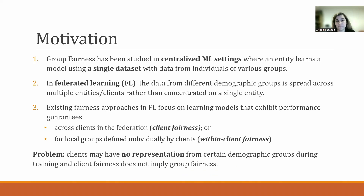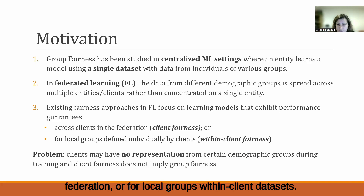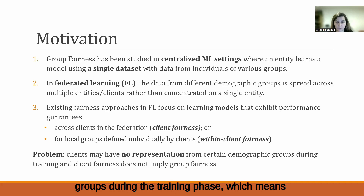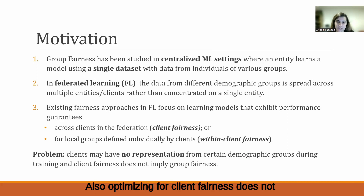Existing fairness approaches in Federated Learning focus on exhibiting different performance guarantees across clients participating in the federation or for local groups within client datasets. However, clients might have no representation from certain demographics — certain sensitive groups — during the training phase, which means that within-client approaches cannot ensure fairness. Also, optimizing for client fairness does not necessarily imply that the final model will guarantee group fairness.